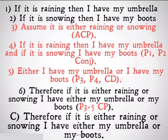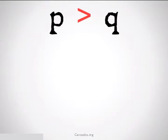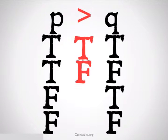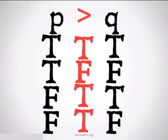To understand why this works, let's take a look at the truth table. If I have P implies Q, the only time this is going to be false is if P is true and Q is false. So if I go in and assume that P is true and end up with Q being true, the entire implication must be true.